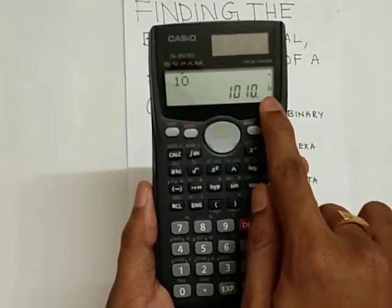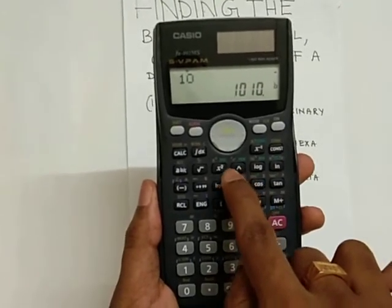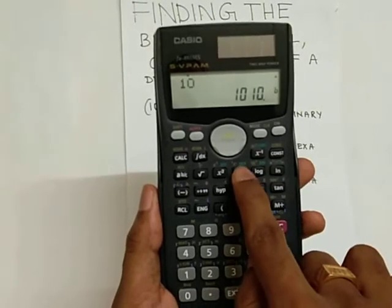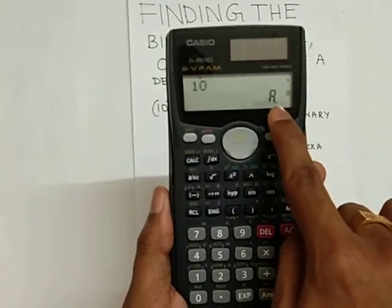You can see B here. If you want to see the hexa value, press HEX which is the next button after x square. You can see H and the equivalent value is A.